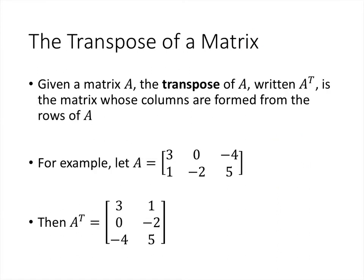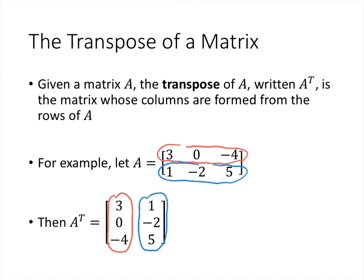Another operation we'll sometimes do with matrices is called transpose. The transpose of a matrix, written A^T, is a matrix whose columns are formed from the rows of A. So if we have a row 3, 0, negative 4 in A, then in A transpose that row becomes a column: 3, 0, negative 4. Similarly, the row 1, negative 2, 5 in A becomes the column 1, negative 2, 5 in A transpose.